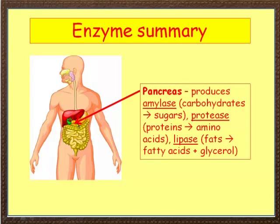This very important organ called the pancreas produces a range of enzymes, including: amylase, which breaks down carbohydrates into sugars; protease, which breaks down proteins into amino acids; and lipase, which breaks down fats into fatty acids and glycerol. These are the reverse of the building-block processes we talked about earlier.